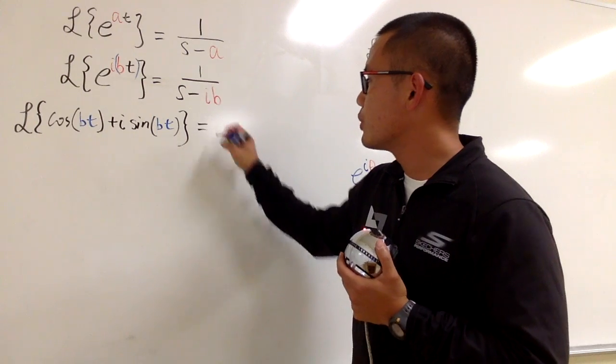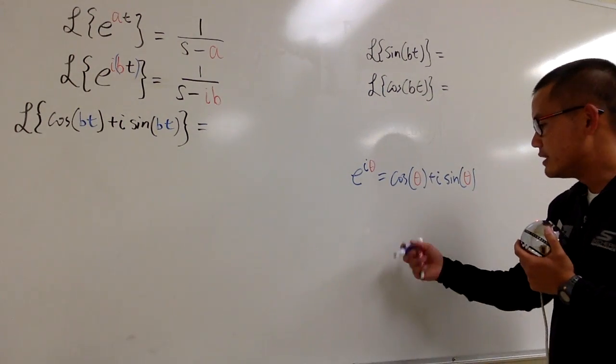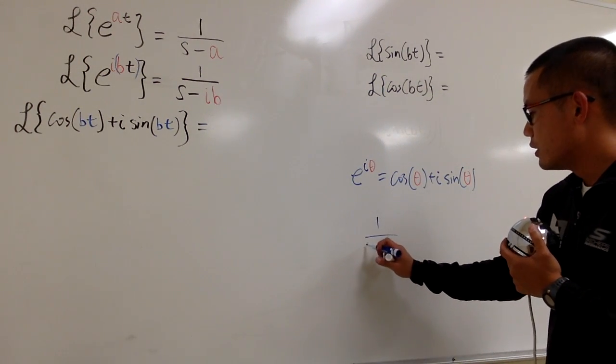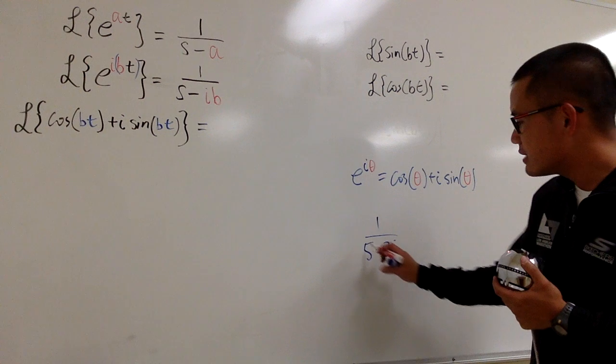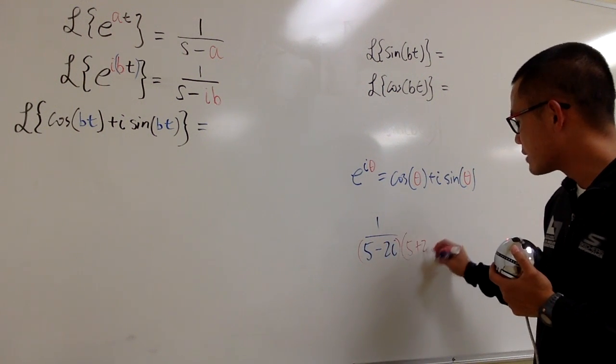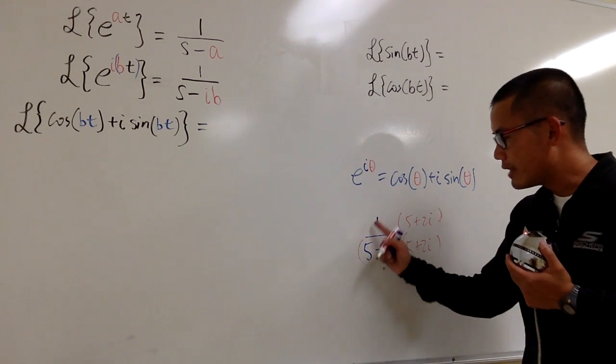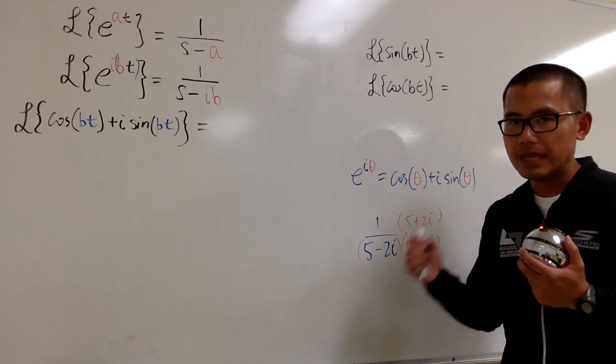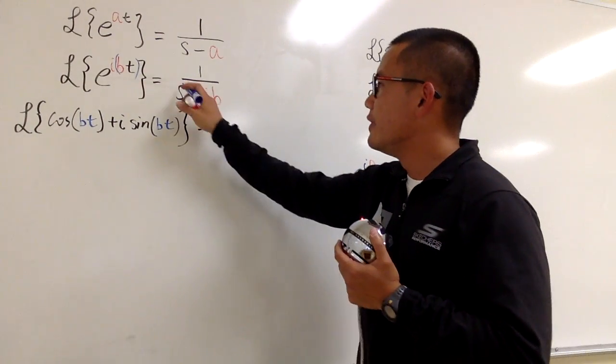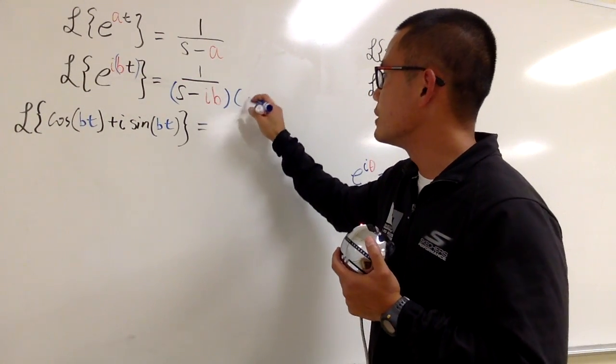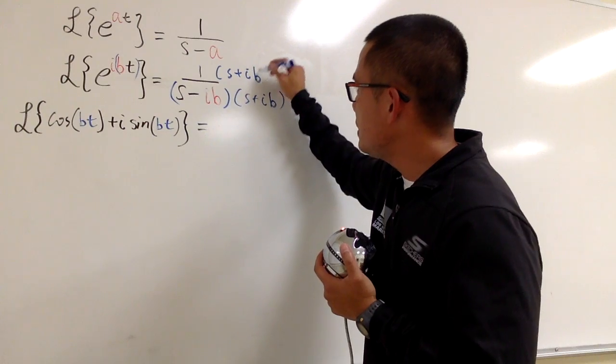Now, let me ask you guys, what did we use to do when we see a question like this? If you have 1 over 5 minus 2i, back in your algebra class, what do we use to do with this? You multiply the top and bottom by the conjugate, 5 plus 2i. The point of doing this is that you can write this complex number into the standard form, a plus bi. I will do this for you guys. Let me multiply the bottom by the conjugate, which is s plus ib. And I will do the same on the top as well, s plus ib.